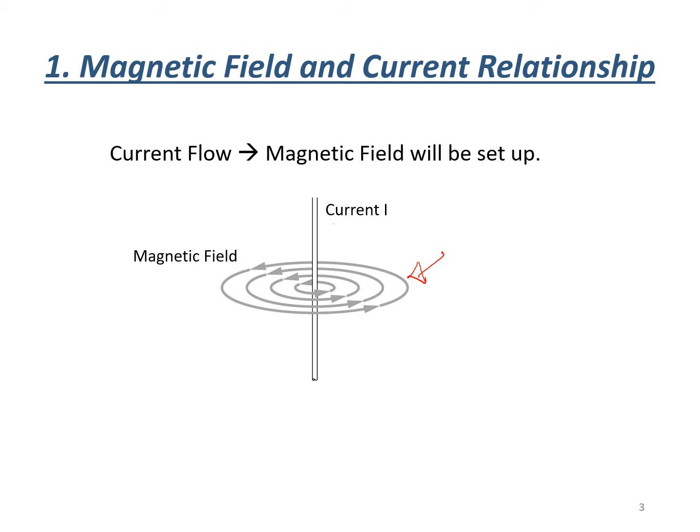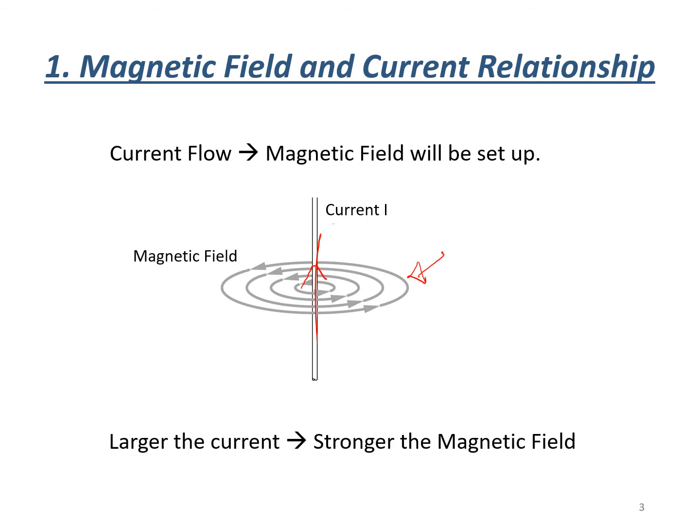These are the magnetic fields as the current flows in the upward direction along the wire. The larger the current, the stronger the magnetic field around it. In other words, the strength of the magnetic field set up is actually proportional to the current itself.